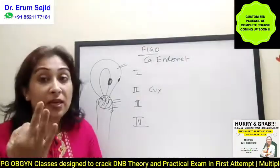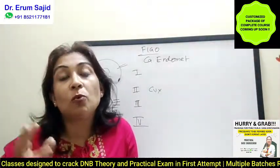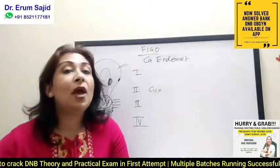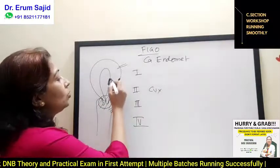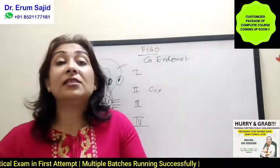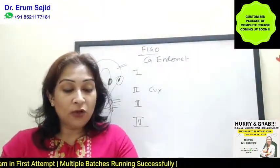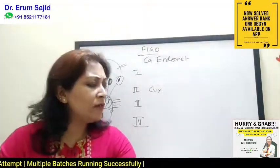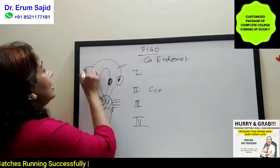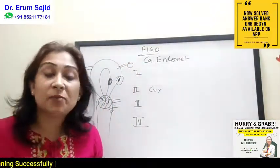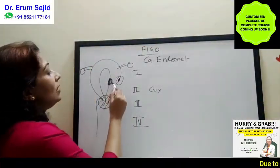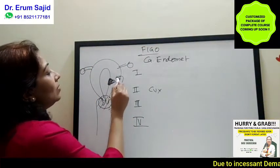Now stage 3: if you know stage 1 and stage 2, you will automatically understand stage 3. Stage 3a is spread to the outer surface of the uterus — involvement of the serosa of the uterus and/or the adnexa. When it reaches the uterine serosa, the adnexa can also get involved. So spread to the adnexa or serosal surface is stage 3a, coming from the myometrium outward.